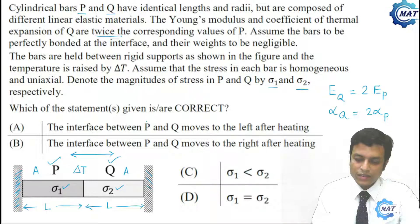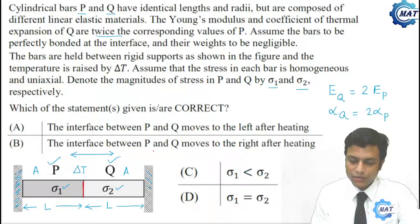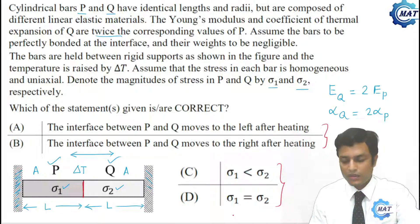Which of the statements given is or are correct? First statement: the interface between P and Q moves to the left after heating. This is the interface, so interface moves which direction? First of all we have to calculate. Option B gives interface between P and Q moves to the right. Which one is correct? We have to determine.